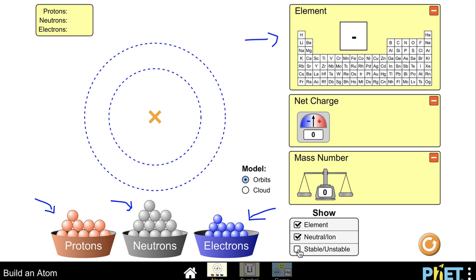Now we can also click on stable unstable to find out if this atom that we make is stable or unstable. So let's go ahead and make a quick atom here and let's clear off what we've written on the screen and let's go ahead and take a look at these.